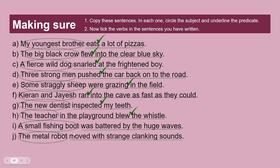Sentence I: 'A small fishing boat was battered by the huge waves.' We're looking at the action verb, not the being verb. Sentence J: 'The metal robot moved with strange clanking sounds' — verb: 'moved.' And of course, you'll notice all the verbs are in the predicates.